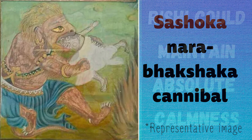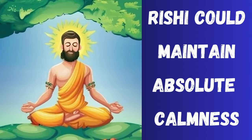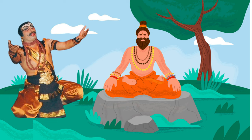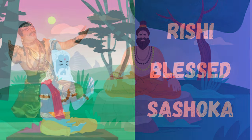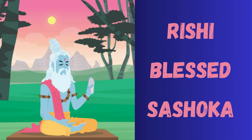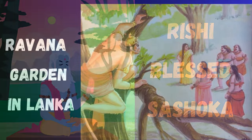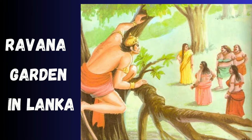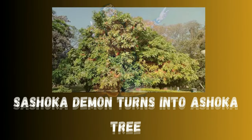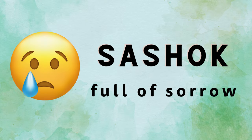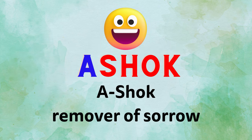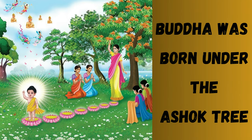Sashoka expresses his desire to give up his restless life and become serene like the rishi. The rishi blessed Sashoka that in his next life he would be born as a tree in Ravana's garden in Lanka. The demon named Sashoka turns into an Ashoka tree. The rishi prophesied that Sashoka would be known as Ashoka, the remover of sorrow.